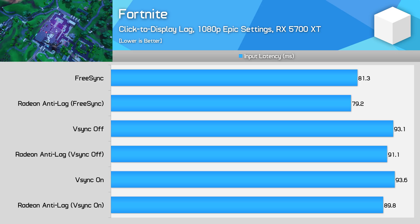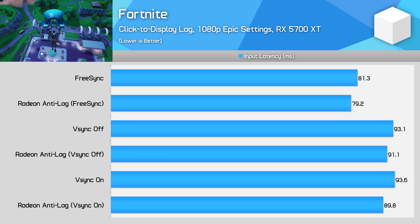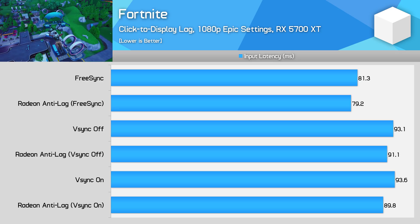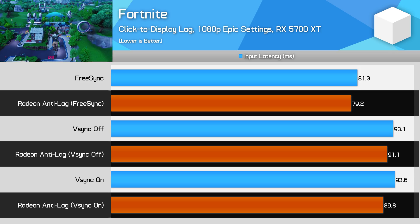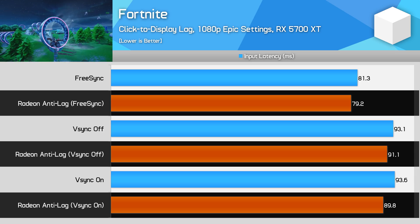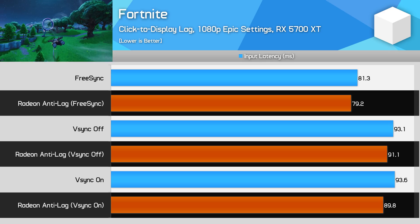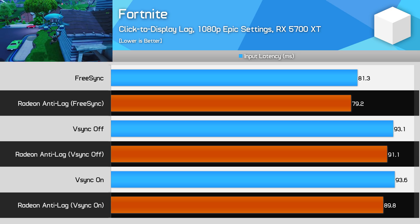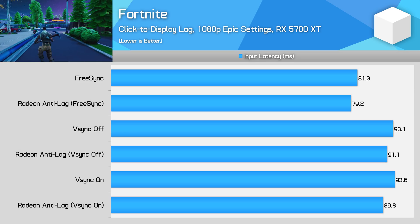Next up we have Fortnite, and again this is a game that's going to run really well on most hardware. Even playing the game on the Epic preset at 1080p, I was achieving 170 FPS or so during testing. Radeon Anti-Lag was consistently faster, in the range of 2 to 4 milliseconds better, but with frames coming in every 5.9 milliseconds or so, we simply aren't going to get much more of a reduction in input latency. AMD says that the benefits of Radeon Anti-Lag are most pronounced when gaming between 60 and 90 FPS, and in the two games tested so far, even with maximum quality settings, I was easily more than double that frame rate.